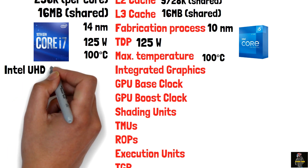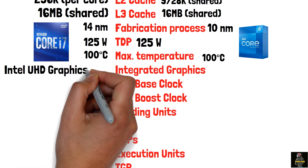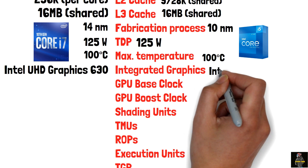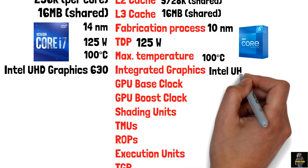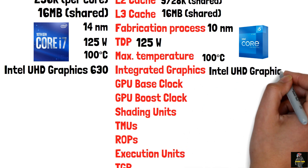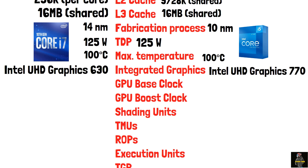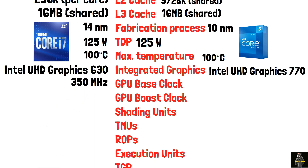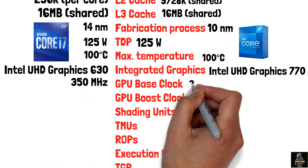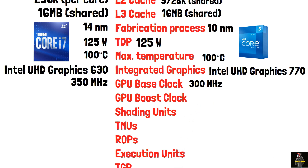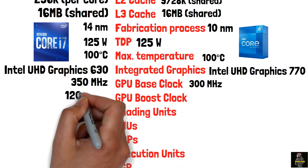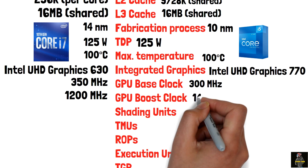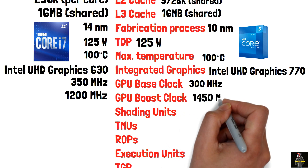Intel UHD Graphics 630 on the i7-10700K has a base clock of 350 MHz and a boost clock of 1200 MHz. Intel UHD Graphics 770 on the i5-12600K has a base clock of 300 MHz and a boost clock of 1450 MHz.